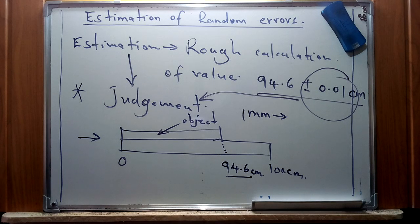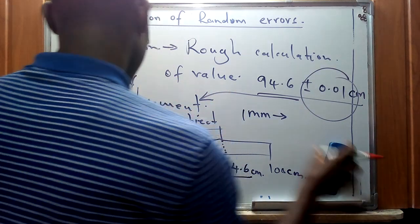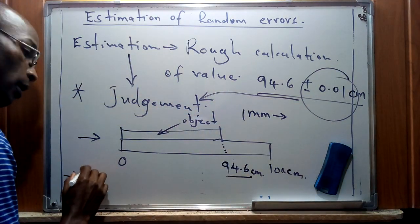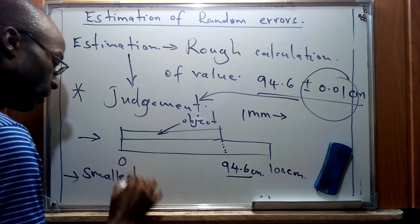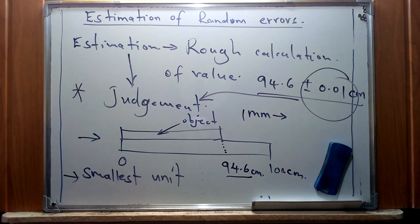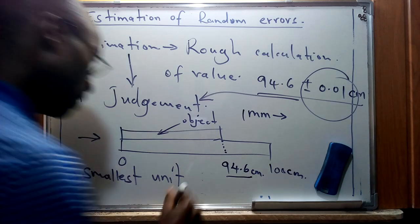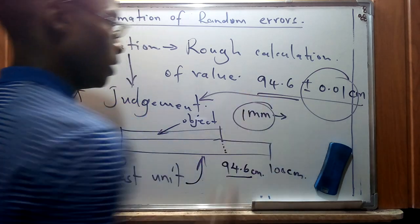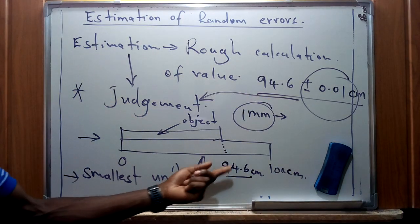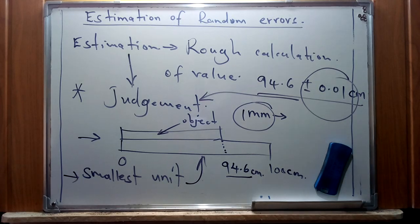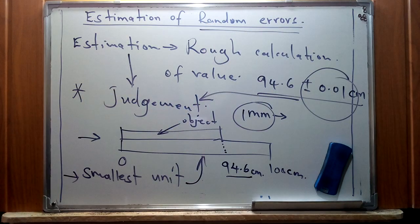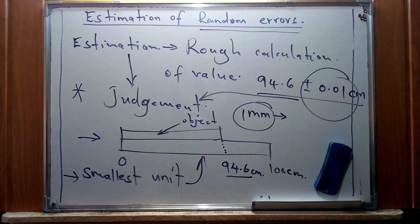From our conclusion, a random error is expressed as an estimation of the smallest measurable unit of an instrument — in this case, the meter rule. Now we are going to look at the standard methods for recording these specific errors, so that there is a universal way to represent them that is comprehensible to everybody.